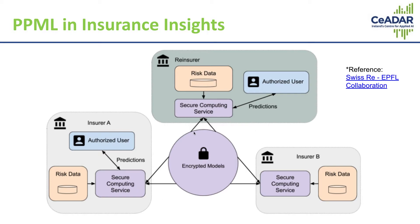A similar system could also be used in your company. You need to think about whether you have models which are important, and if those models are open to clients — that means clients can see the results — they can be re-engineered. So you want to protect those models. Machine learning algorithms can also leak sensitive data, so you need to encrypt the outputs of those models too. Privacy preserving machine learning can help you protect your models and your business secrets.